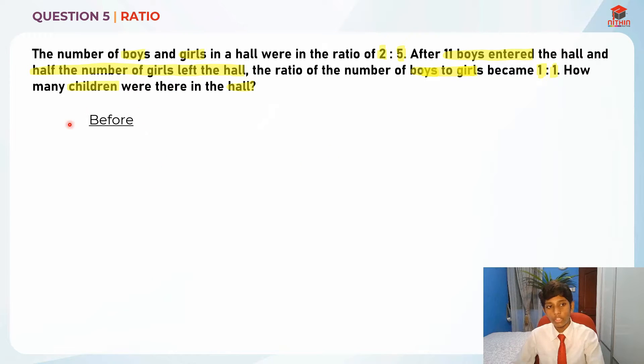So boys to girls, it was 2 is to 5. So what am I going to do first? I'm actually going to times 2 both sides, which will give us 4 is to 10. Do you know why?